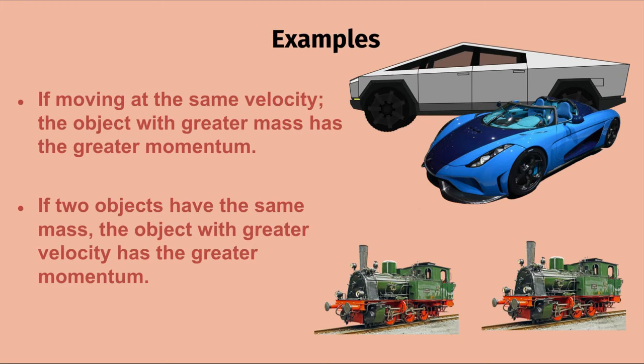Some key summary points: if moving at the same velocity, the object with greater mass has greater momentum. For example, a Cybertruck versus a sports car — if both move at the same velocity, the Cybertruck has greater momentum because of its greater mass.